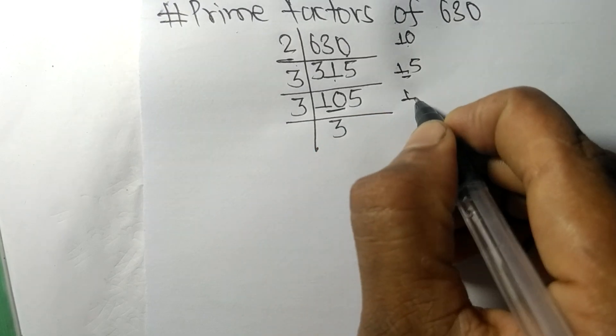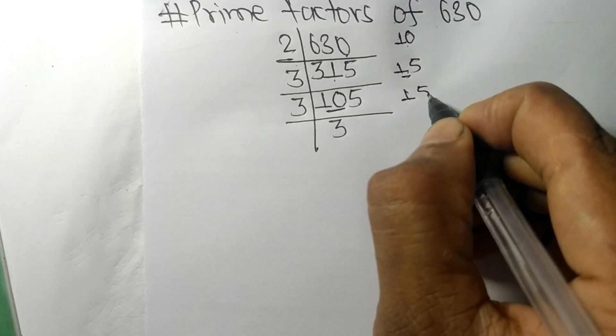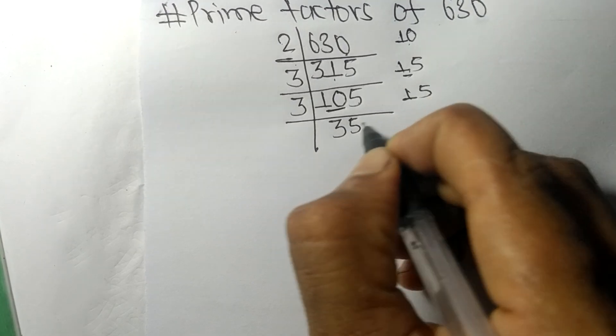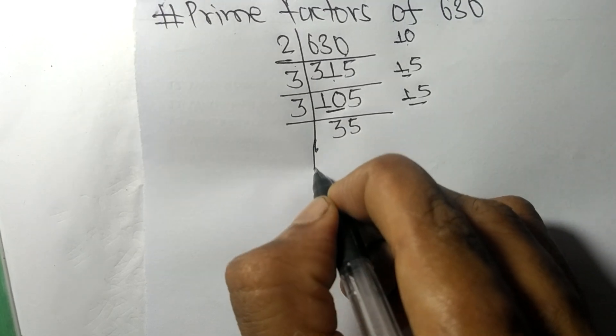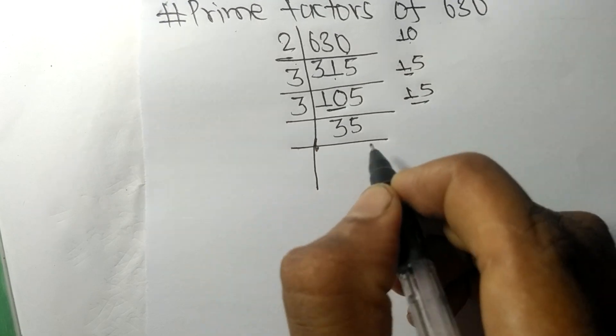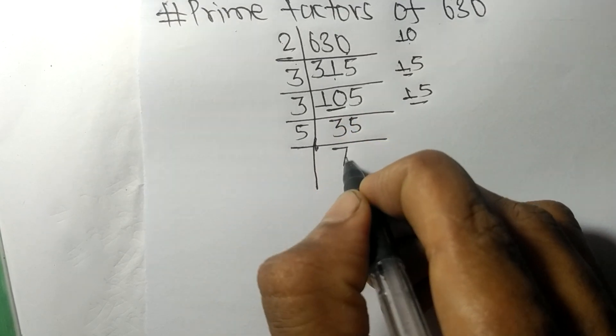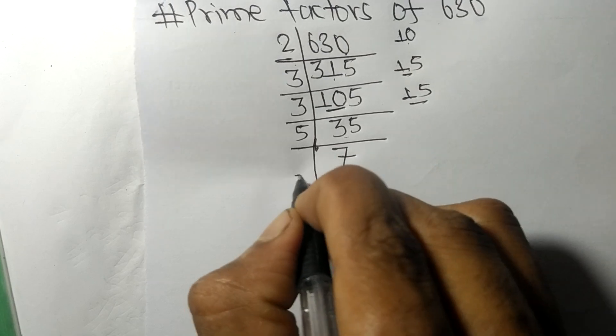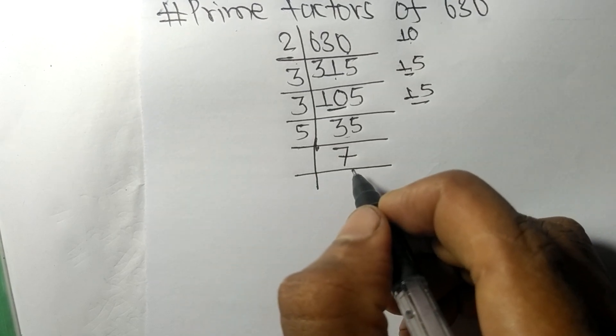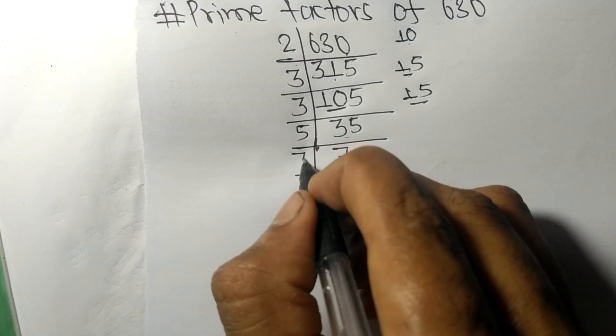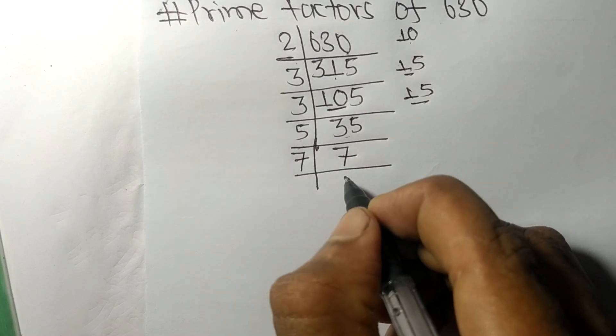And this 5: 15, 3 times 5 means 15. So now we got 35, which is exactly divisible by 5. 5 times 7 means 35. Now we got 7, which is divisible by 7, and we get here 1.